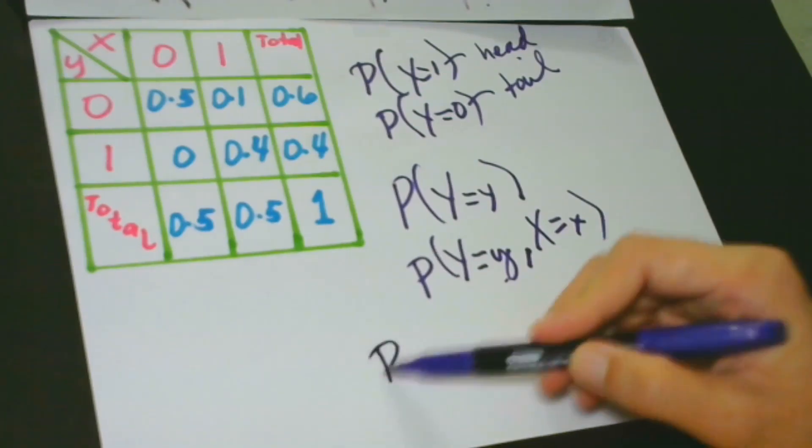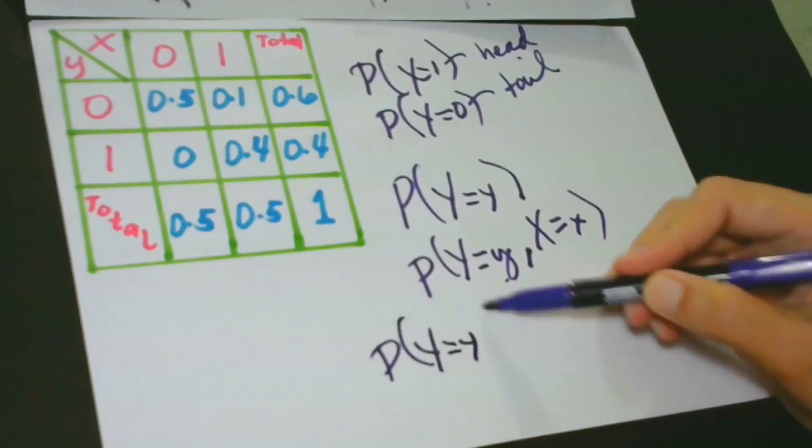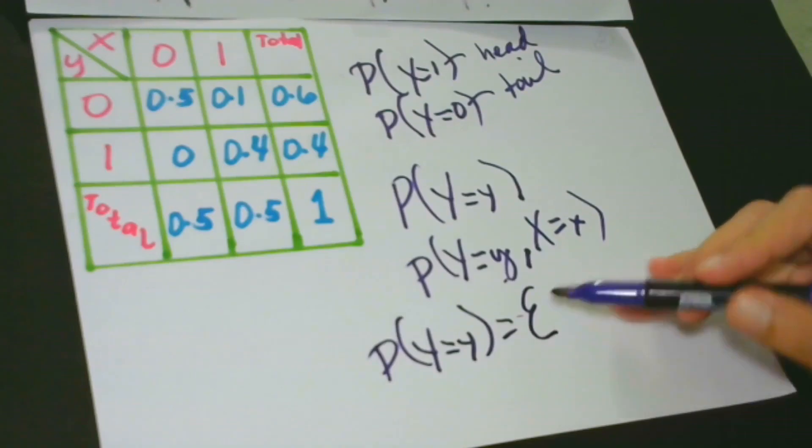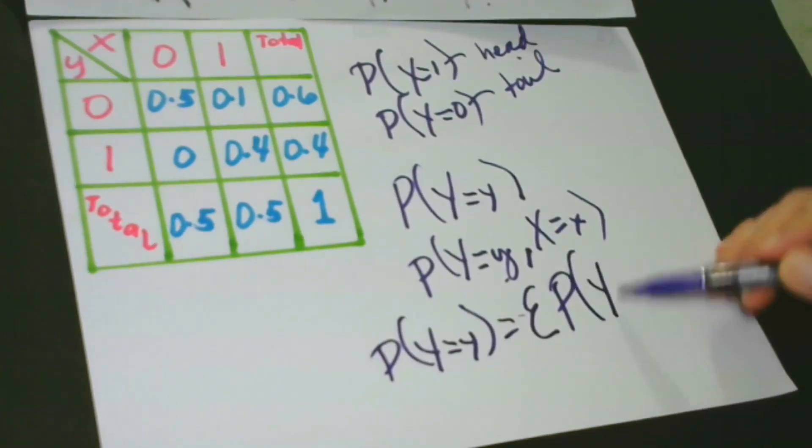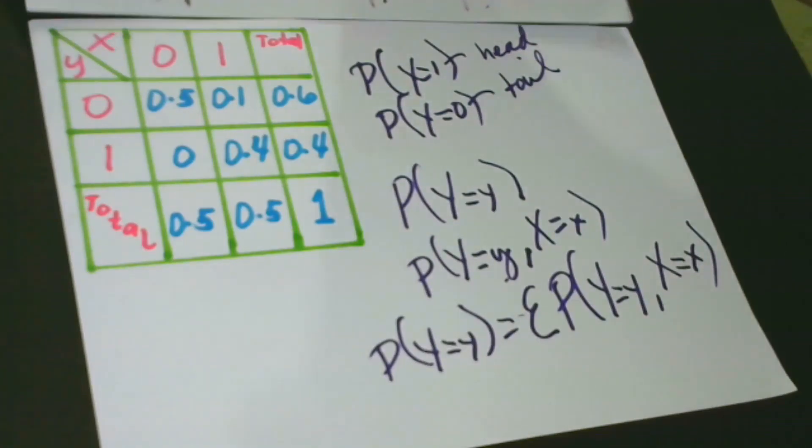P(Y=y) equals summation of the probabilities of Y equals y and X equals x. What is the meaning of this? When Y is 0, the marginal distribution is 0.6.